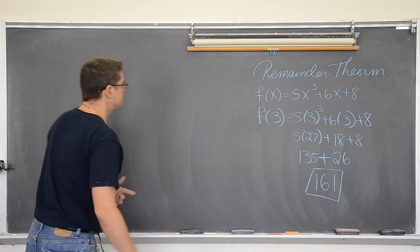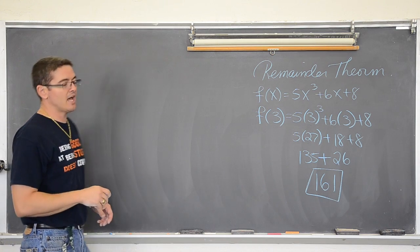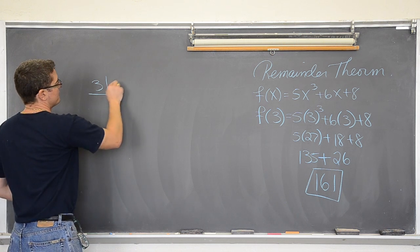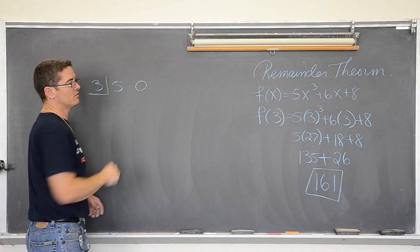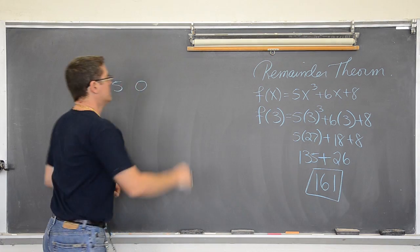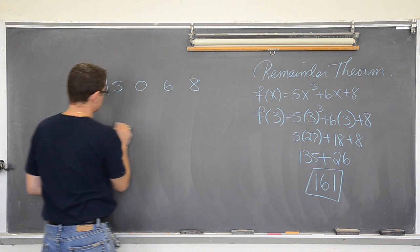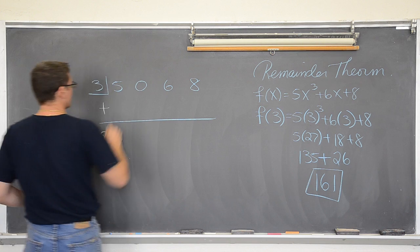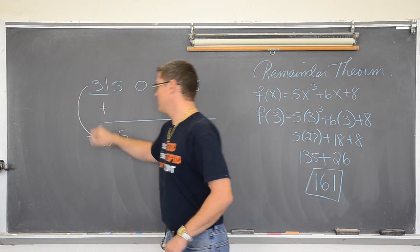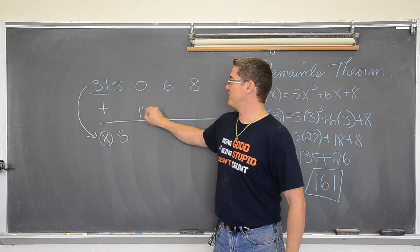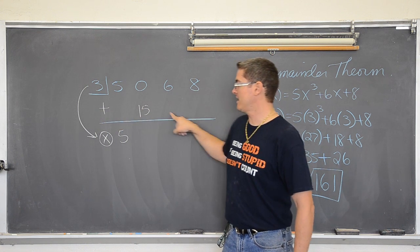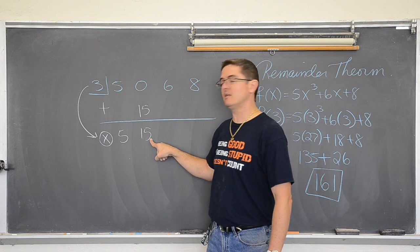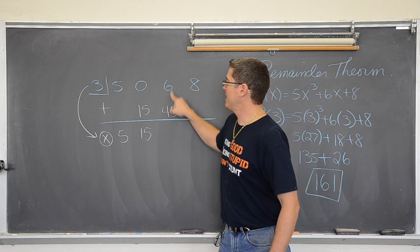What would that look like with synthetic division? Well, I am asked to figure out what f of three is. So I am going to synthetically divide by three. Let's see if we can do this. Remember it is addition and multiplication down here. So bring down the five and multiply. Three times five is fifteen. Add on this line. Zero and fifteen is fifteen. Now multiply. Three times fifteen, that is forty-five. And add. That is now fifty-one.